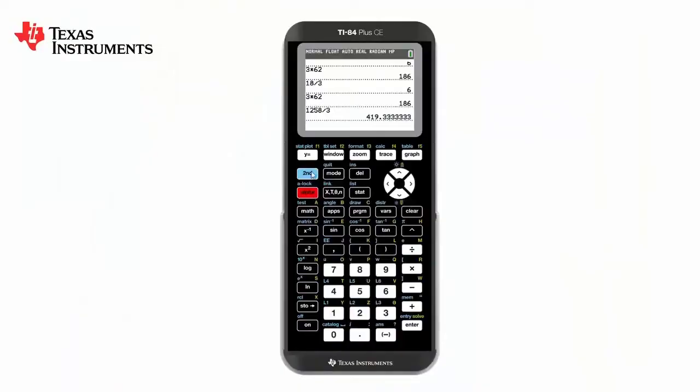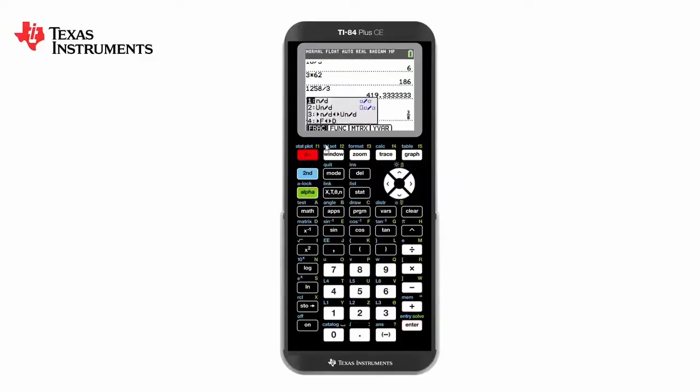You can see in F1 the fraction functionalities of the calculator. Either by pressing 1 or enter, we get the fraction template, allowing us to type in various fractions and using the arrow key to move down to the denominator. By pressing enter, we get the answer as a fraction, and by pressing alpha F1 again, we can convert that to a decimal if required.